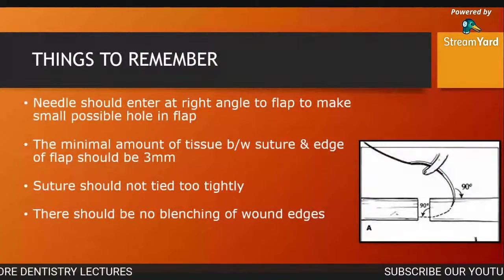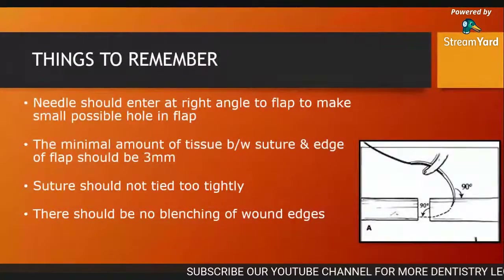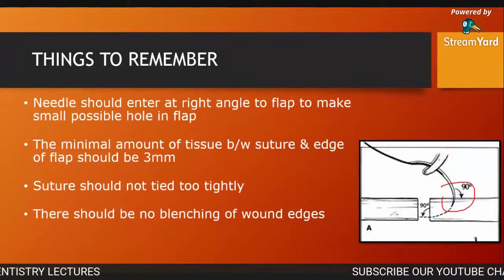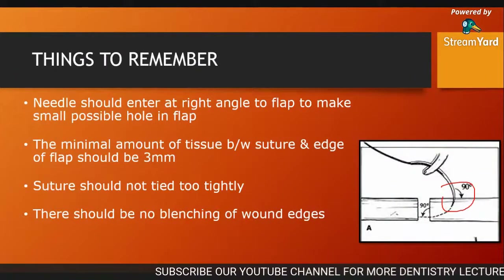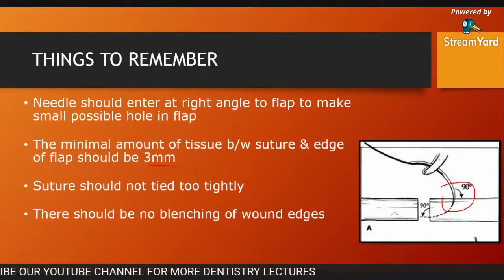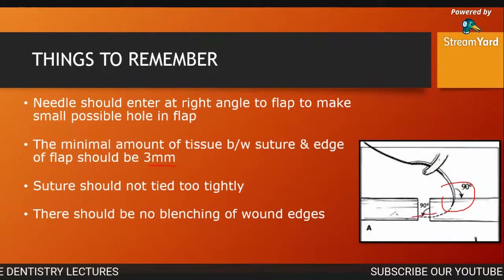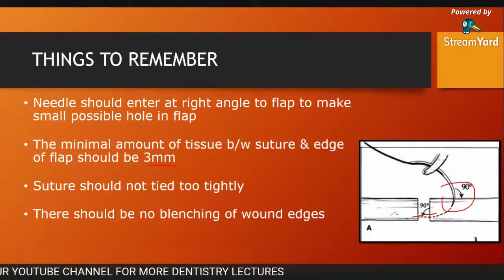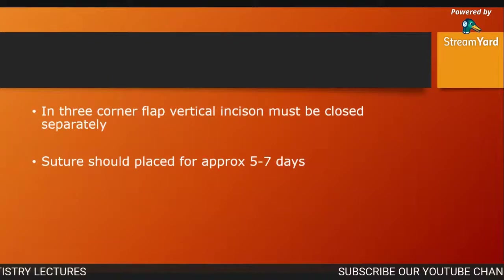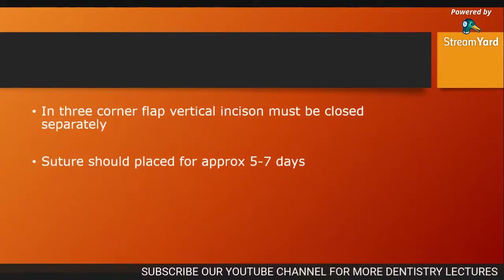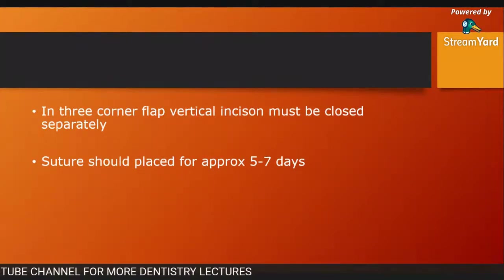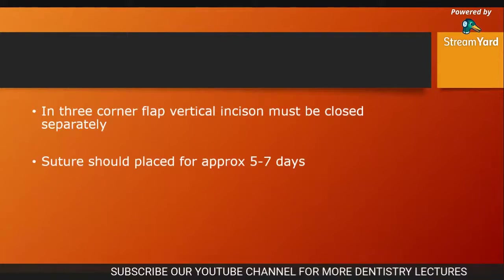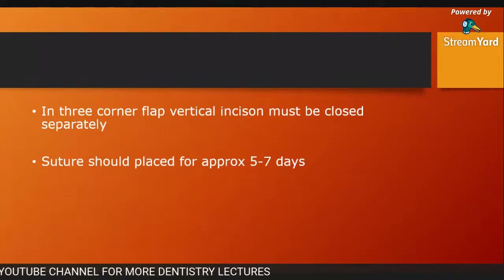The needle should enter at a right angle to the flap to make the smallest possible hole. The minimal amount of tissue between the suture and the edge of the flap should be three millimeters — note this for MCQs. The suture should not be tied too tightly; there should be no blanching of wound edges. In the three-corner flap, the vertical incision must be closed separately. Sutures should be placed and the patient recalled after approximately five to seven days for suture removal.